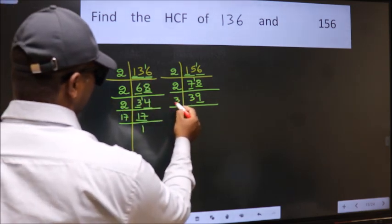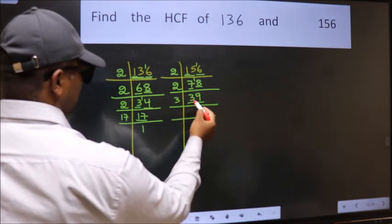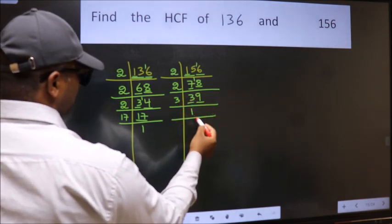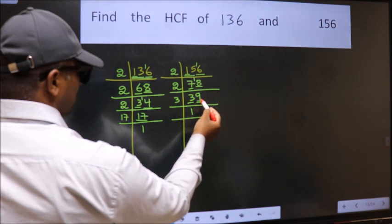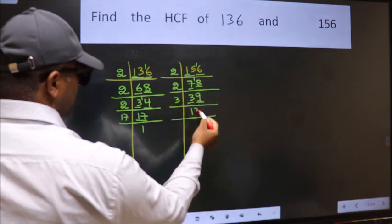So take 3. First number 3. When do we get 3 in the 3 table? 3 times 1 is 3. The other number 9. When do we get 9 in the 3 table? 3 times 3 is 9.